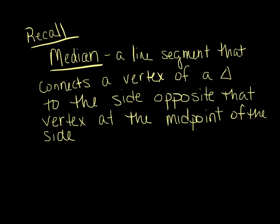So recall for a moment what a median is. A median is a line segment that connects a vertex of a triangle to the side opposite that vertex at the midpoint of the side. So if we have a triangle, the segment connecting this vertex to the side opposite at the midpoint would be a median. Now we have three vertices of this triangle, so there's one from that vertex, there's another one going from the other vertex, and of course we would have a third going from the other vertex to the third side.